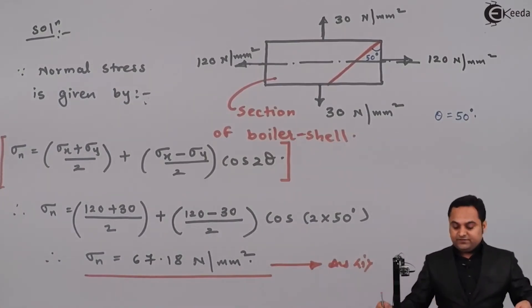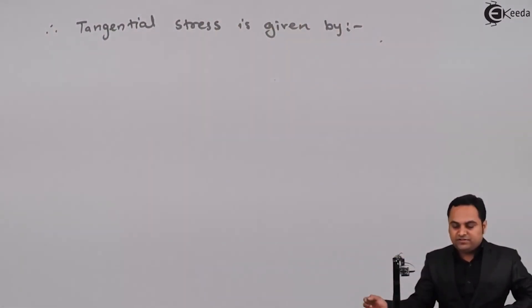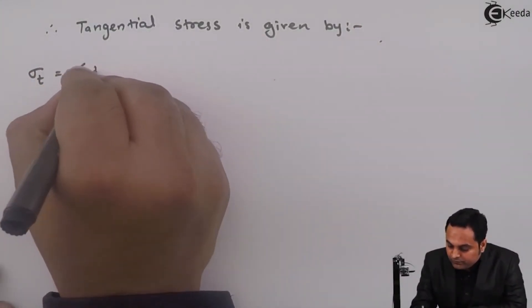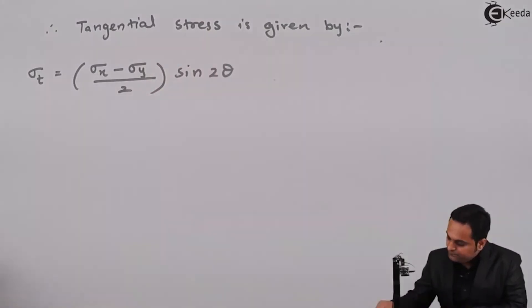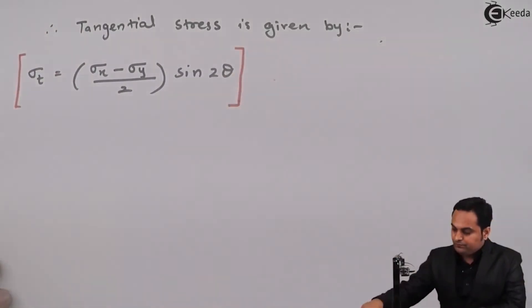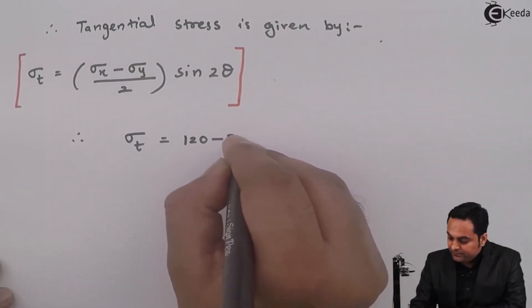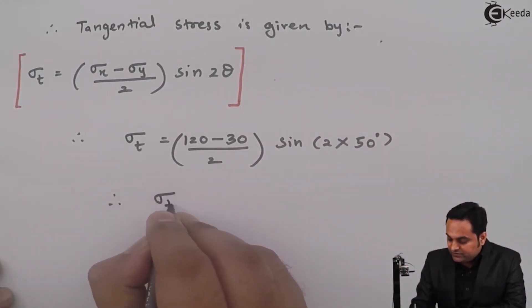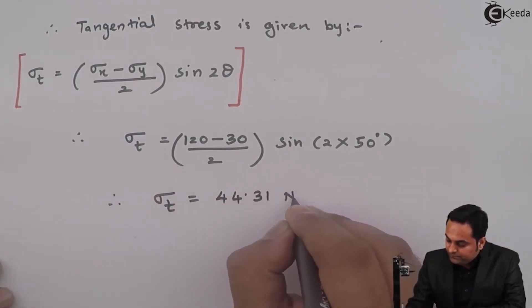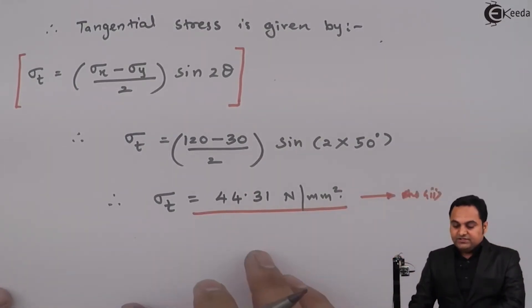Next we calculate the tangential stress on this oblique plane. The formula is: Sigma T = (Sigma X - Sigma Y) / 2 × sin 2θ. Substituting values: Sigma X = 120, Sigma Y = 30, theta = 50 degrees. The tangential stress comes out to be 44.31 N/mm². This is the second answer.